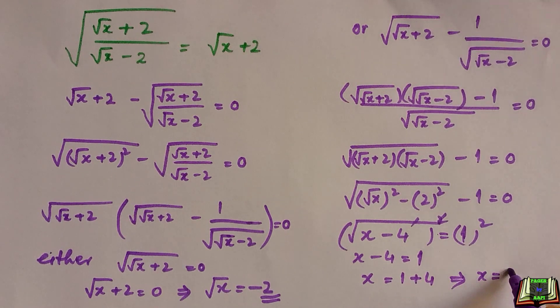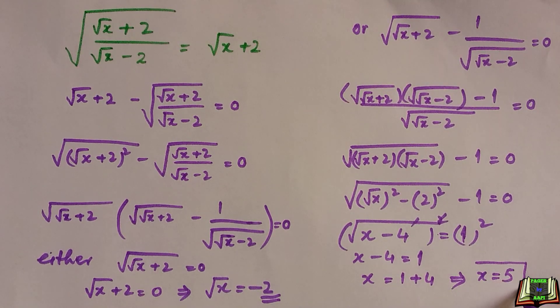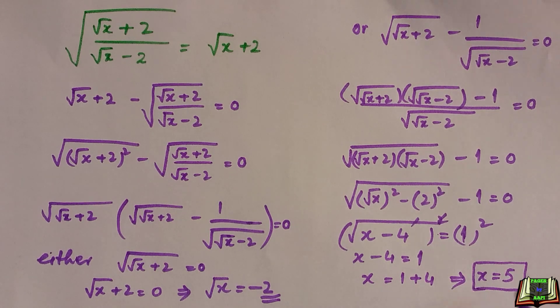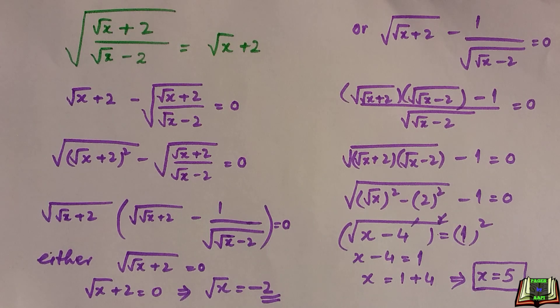So x equals 1 plus 4, which equals 5. x equals 5 is the final answer. I hope it is clear to you — if not, feel free to ask in the comment box. Don't forget to hit the like button. Thanks for watching.